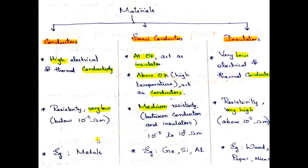What are the examples for conductors? Every metal is a good conductor. If you are constructing a wire, we place a copper rod inside because it is a very good conductor. Examples of insulators are wood, paper, mica, and the insulation around the wire — that is plastic — is also a very good example of insulators. Examples of semiconductors are germanium, silicon, and aluminum.